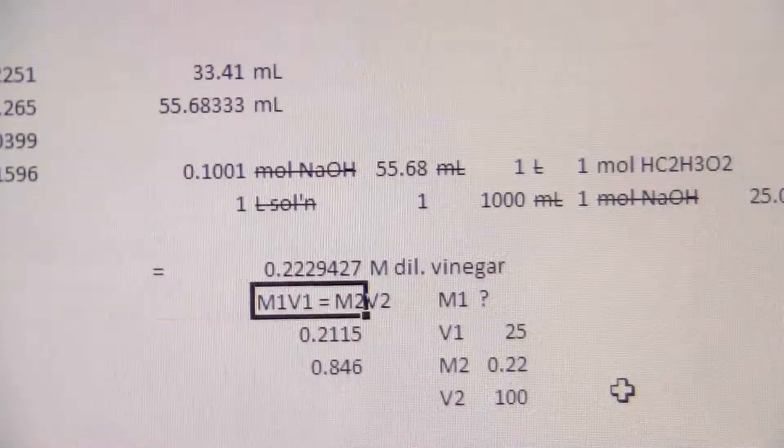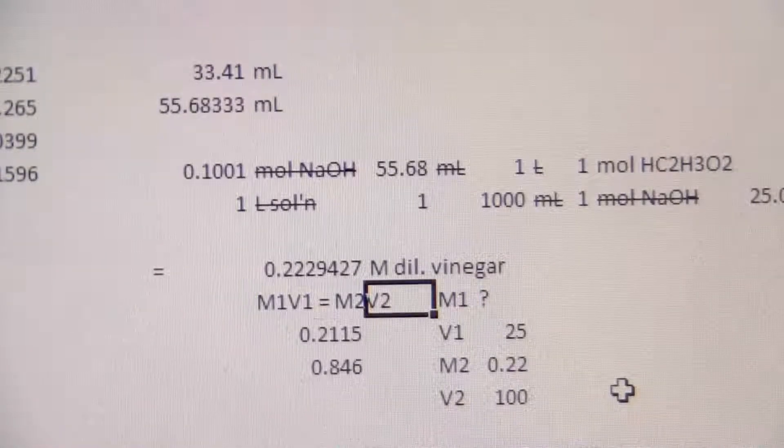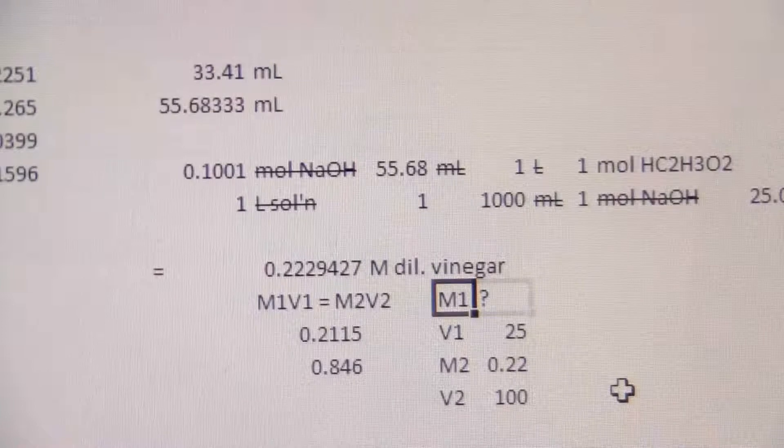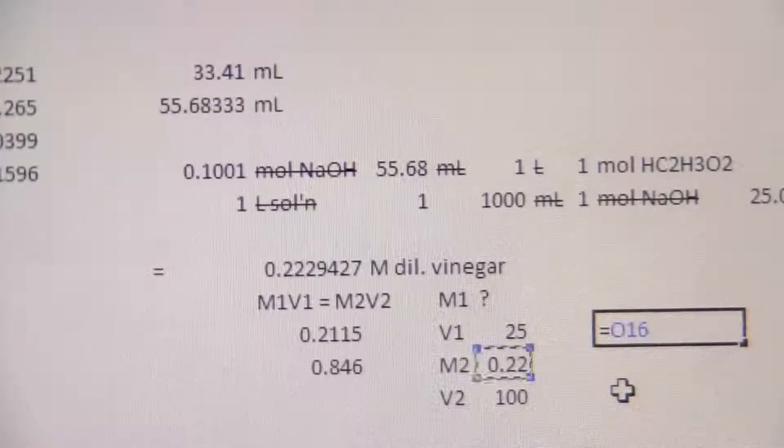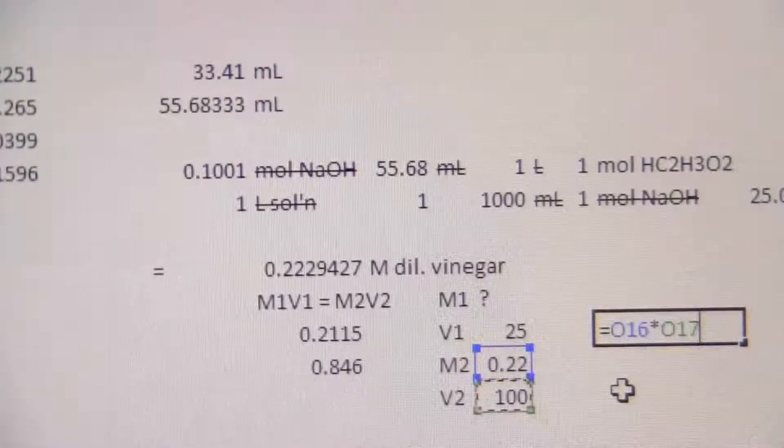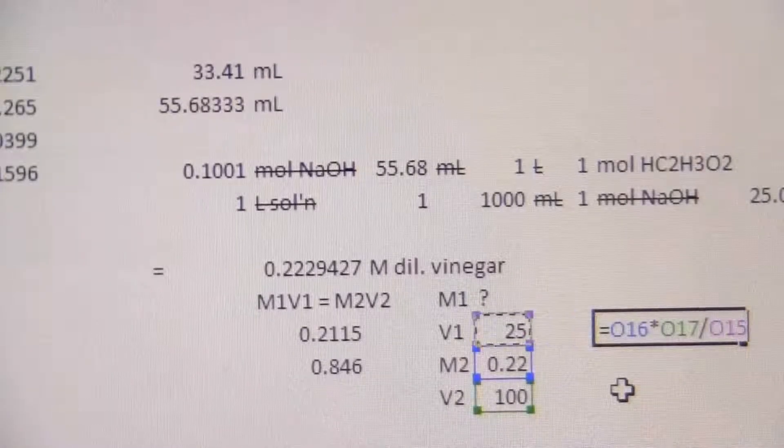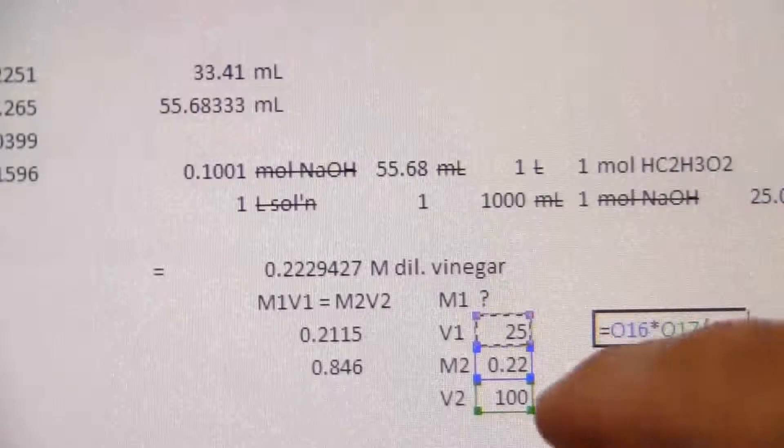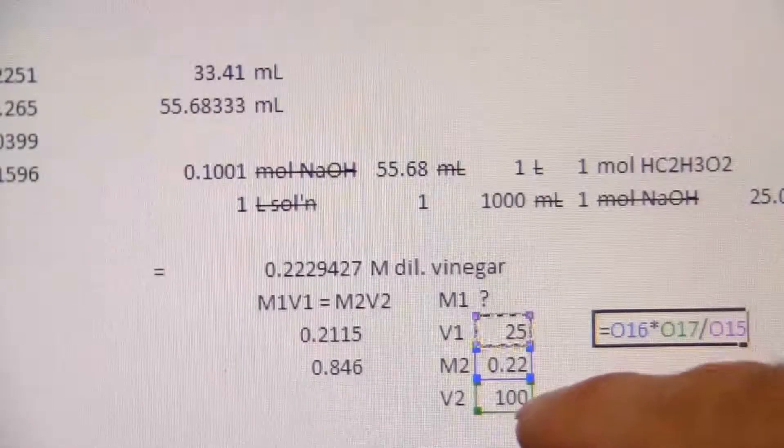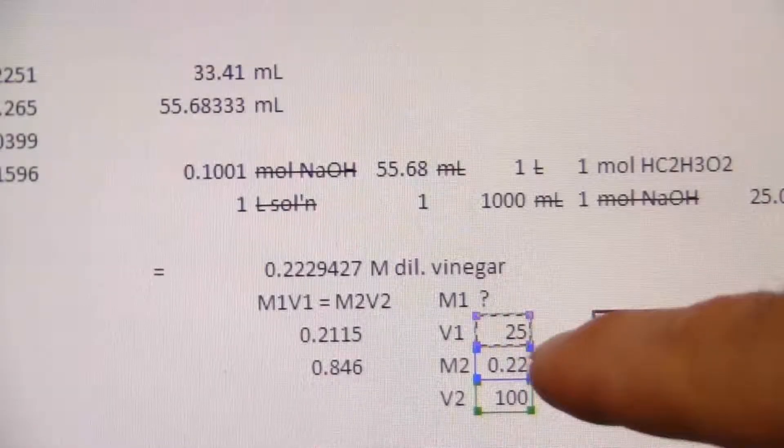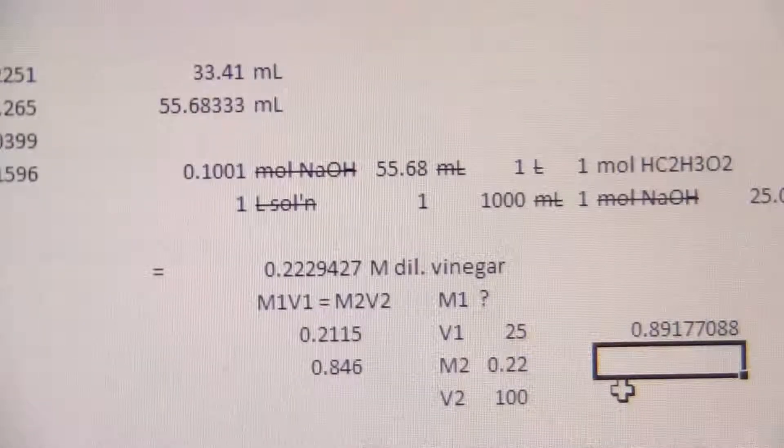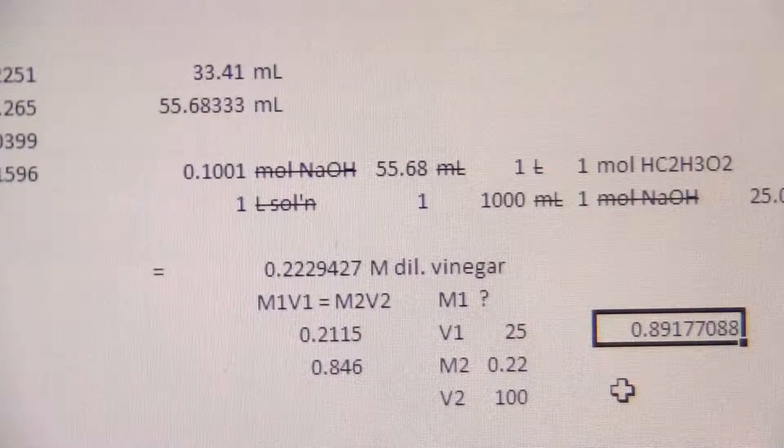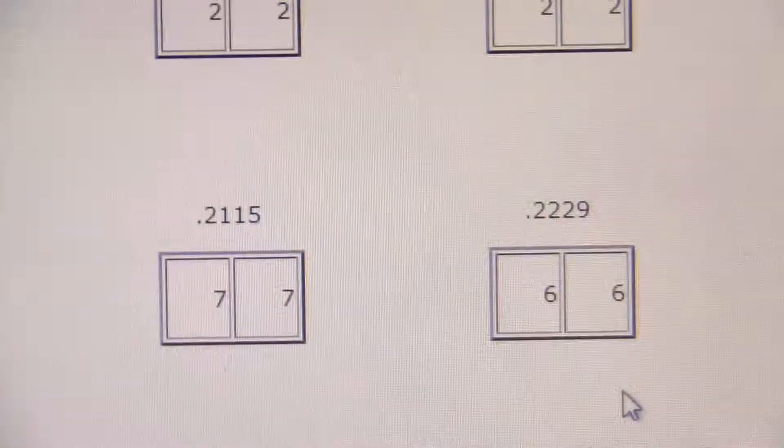So I want to solve this for M1, which will be M2 V2 divided by V1. So M2 times V2 divided by V1 times 100 divided by 25. That's going to give me times 4, so that's where that comes from, 0.8918.